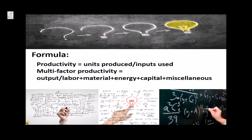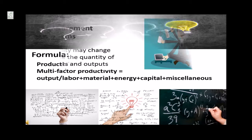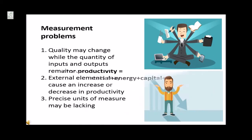Productivity is units produced over inputs used. And the multi-factor productivity is output over labor plus material plus energy plus capital plus miscellaneous.